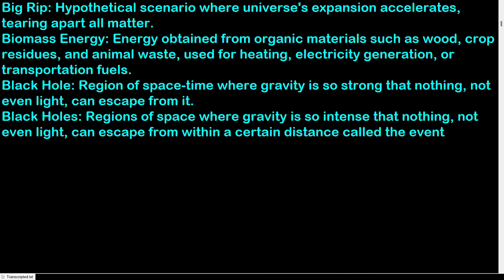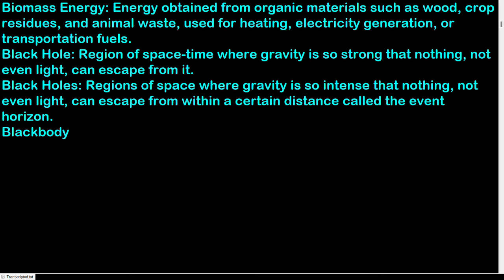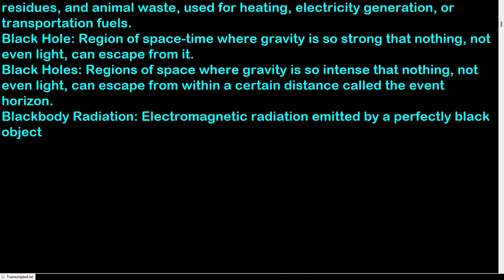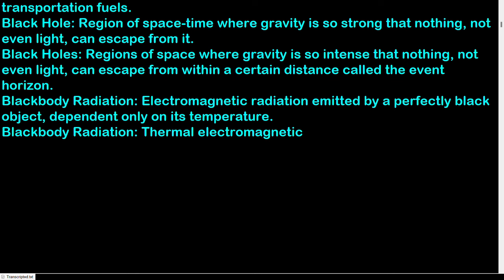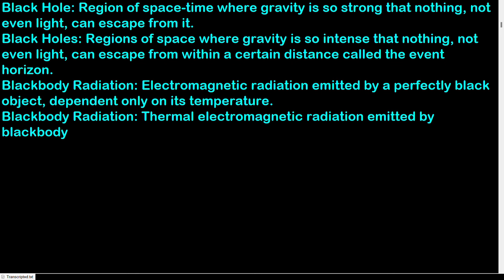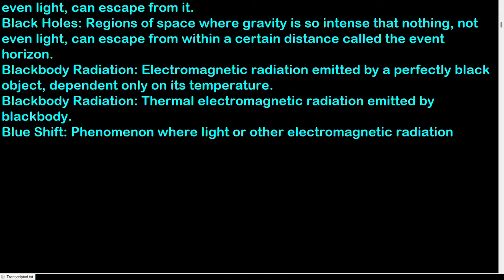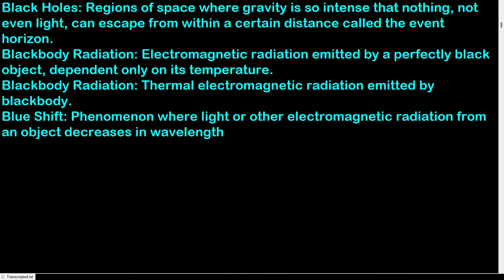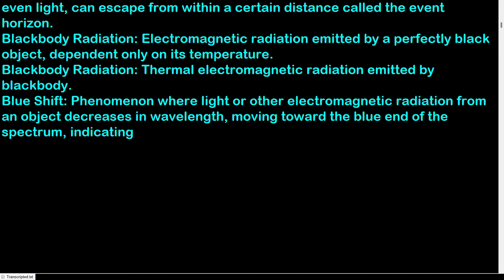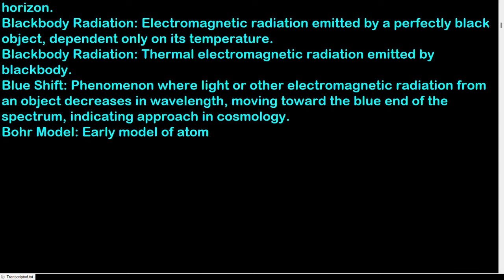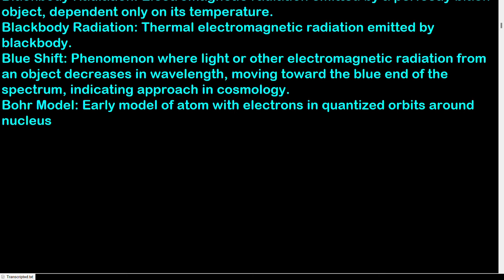Black holes: regions of space where gravity is so intense that nothing, not even light, can escape from within the event horizon. Blackbody radiation: thermal electromagnetic radiation emitted by a blackbody, dependent only on its temperature. Blueshift: phenomenon where electromagnetic radiation from an object decreases in wavelength, moving toward the blue end of the spectrum, indicating approach. Bohr model: early model of the atom with electrons in quantized orbits around the nucleus.